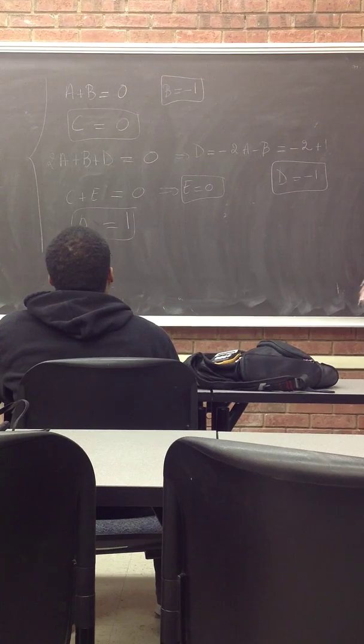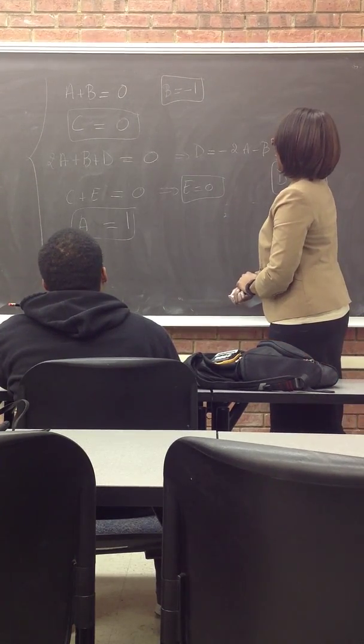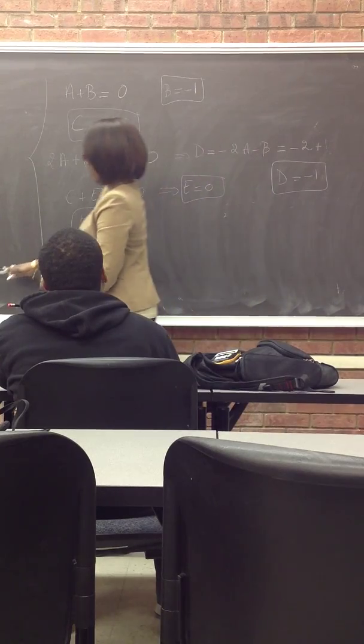And remember, the number of unknowns will tell you how many equations you have, and we had 5 of them, so we have 5 equations. a equals 1, nice.